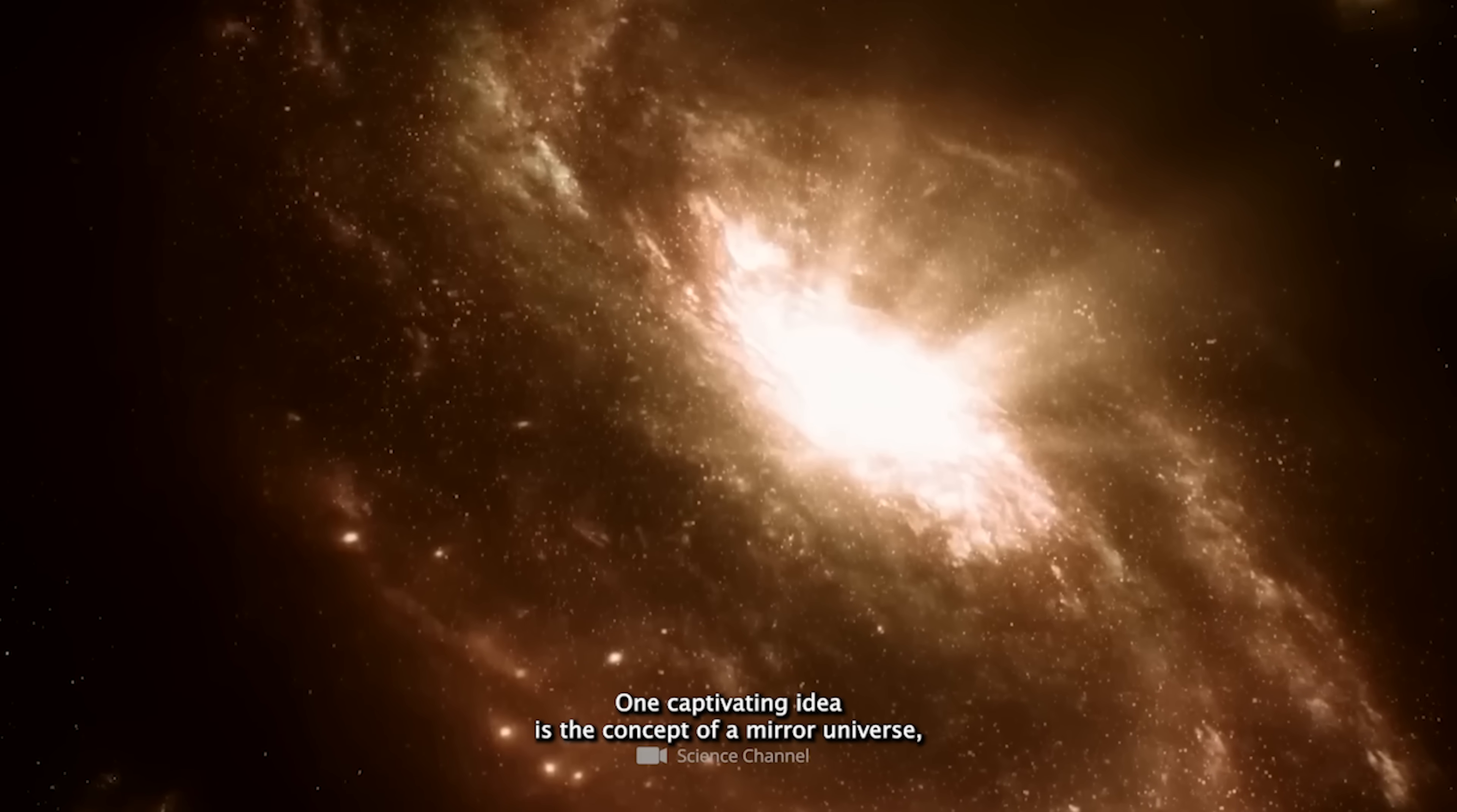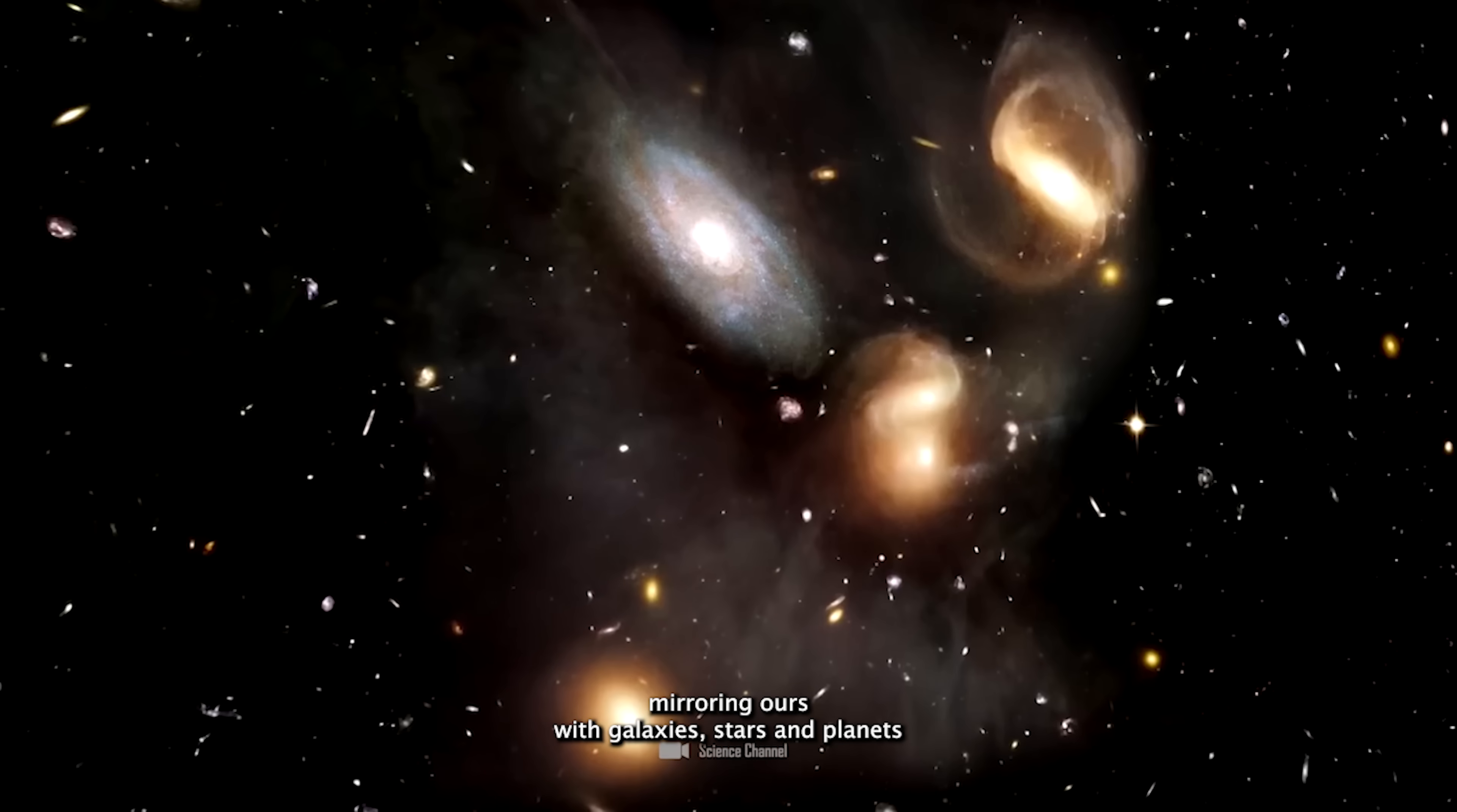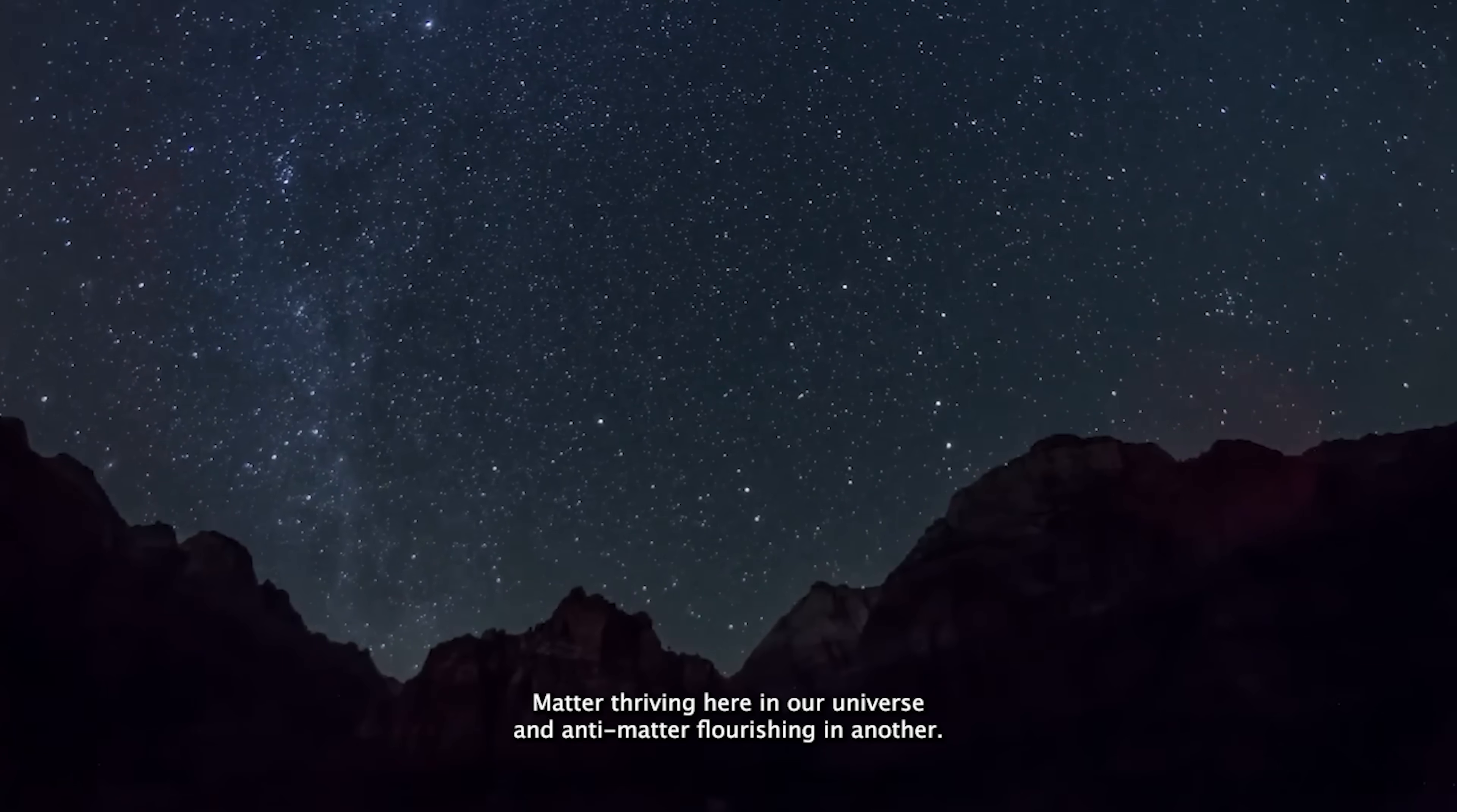One captivating idea is the concept of a mirror universe, a hidden cosmic reflection where antimatter thrives. Could it be that our universe is only half the story? Imagine an anti-universe, a cosmos mirroring ours, with galaxies, stars, and planets just like ours, but made entirely of antimatter. In this bold vision, the aftermath of the Big Bang didn't create a single universe, but split reality into two realms: matter thriving here in our universe and antimatter flourishing in another.